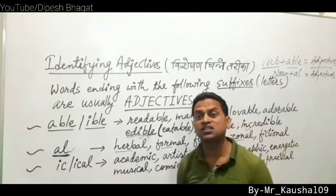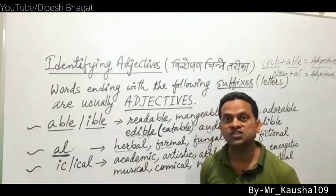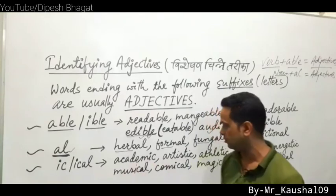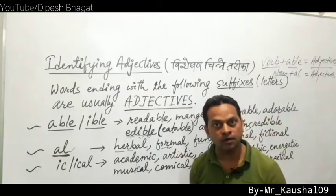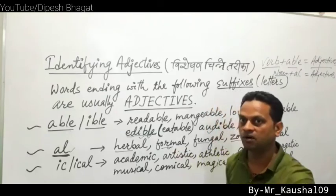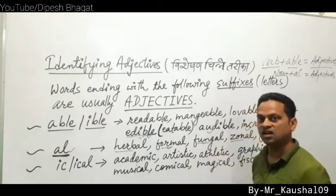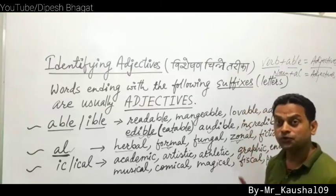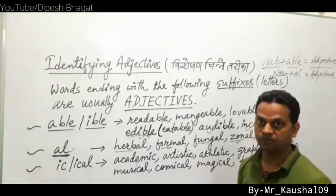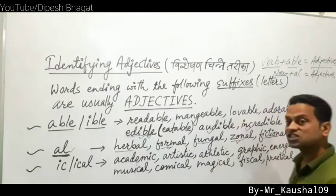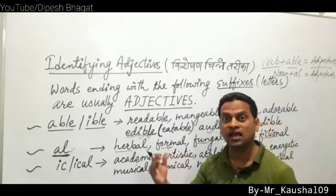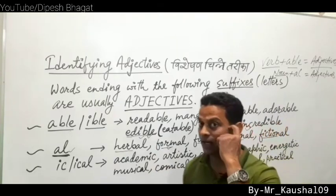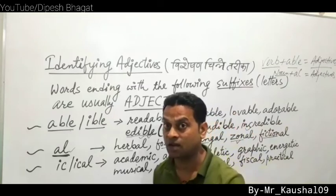So noun plus -al = adjective: herbal, formal, fungal, zonal, fictional are all adjectives. Words ending in -ic: academic, artistic, energetic, graphic are adjectives. Words ending in -ical: musical, comical, magical, fiscal, practical are adjectives. Words having -ical at the end are adjectives.